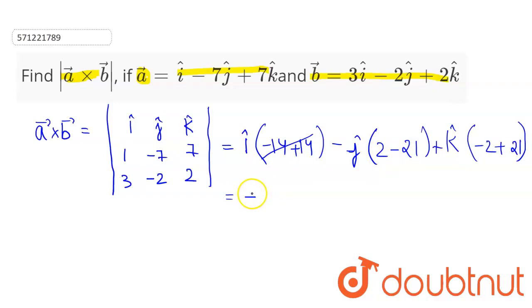2 minus 21 is minus 19. Since we have minus j cap times minus 19, this becomes positive, so this will be plus 19 j cap.